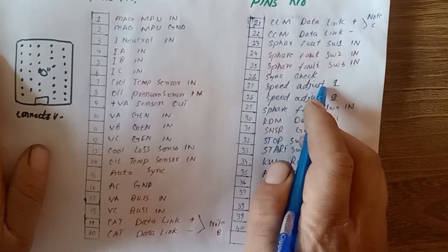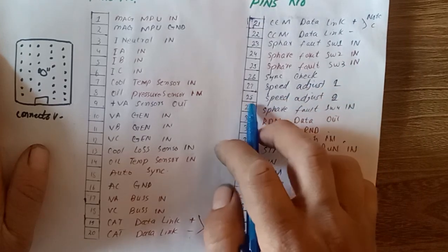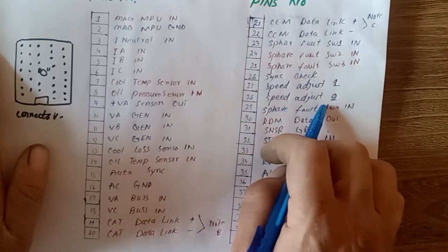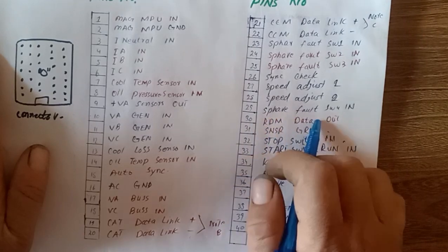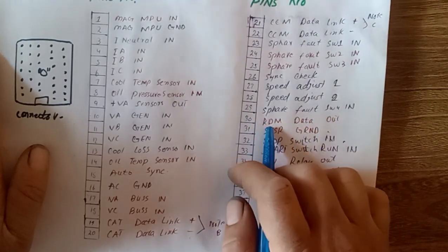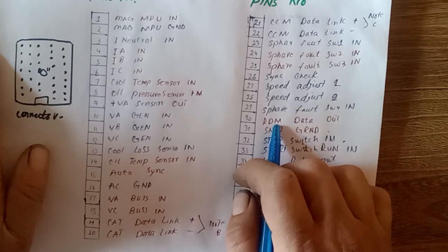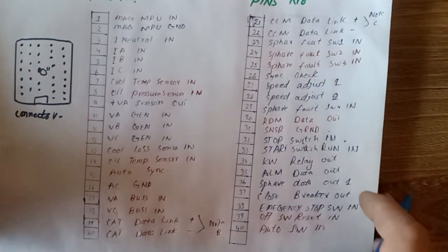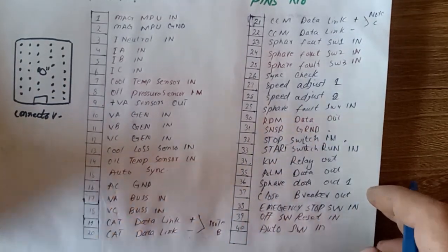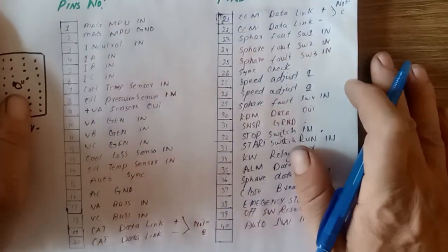Pin 27 is speed adjustment 1, pin 28 is speed adjustment 2, pin 29 is spare fault switch IN. What is RDM? The full form of RDM is Reference Data Management data link data out.